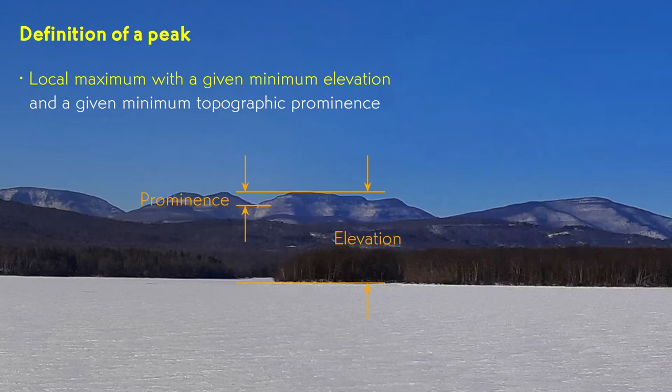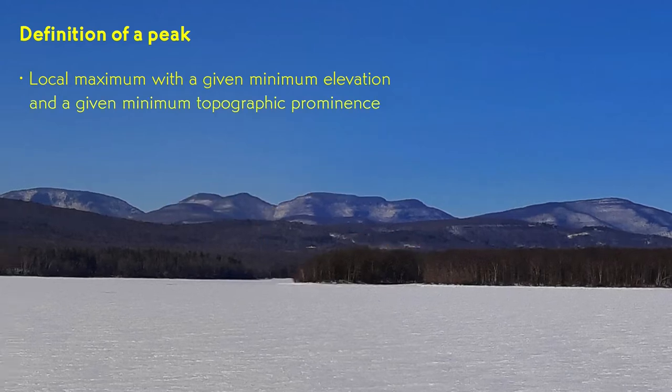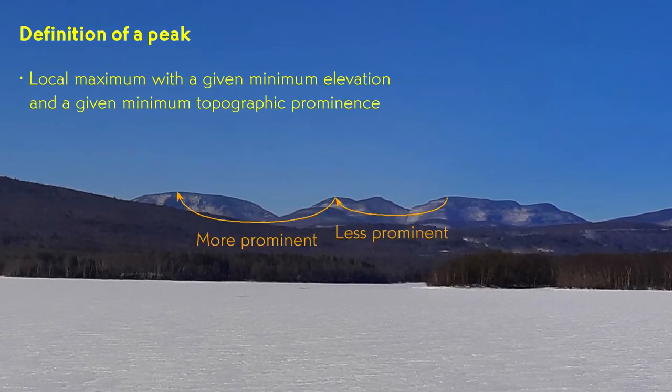Prominence measures how far you have to descend from a peak before you can start climbing a higher peak. In the image, we see the marked peak in the center is more prominent than the one at the right, because to go to the next higher summit to the left, we have to descend into a much deeper valley than we do in getting to the center from the right. Filtering based on prominence removes all the lumps and bumps below a given size.